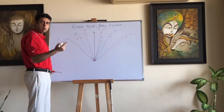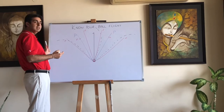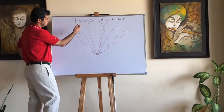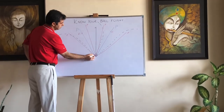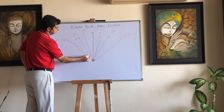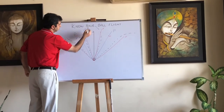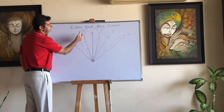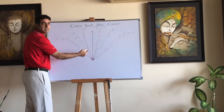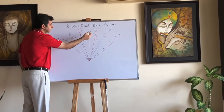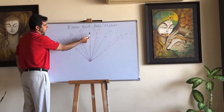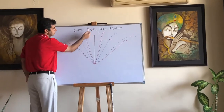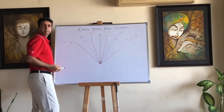With the face closed to the out-to-in path: the ball starts left and curves further left — that's a pull hook. With the face open to the out-to-in path: the ball starts closer to the face and curves away from the path — that's a fade or slice that moves back toward target. The face is between the target and the path, and that's how you hit your fade back to target.